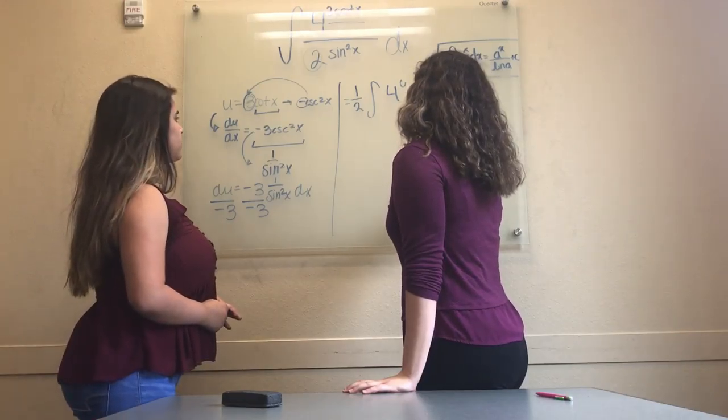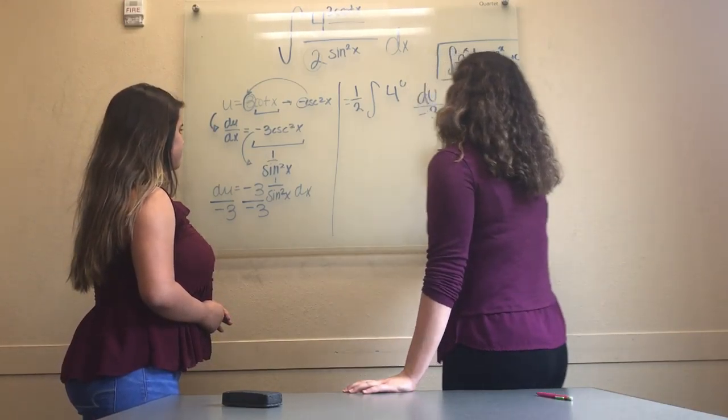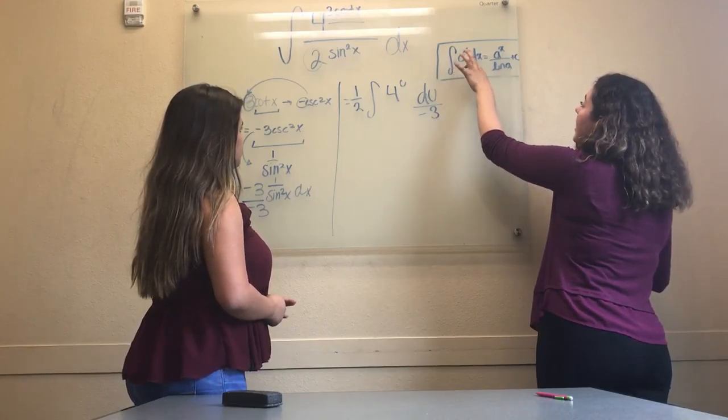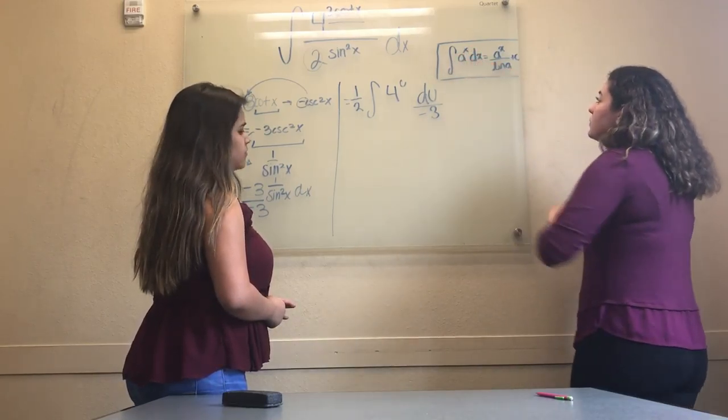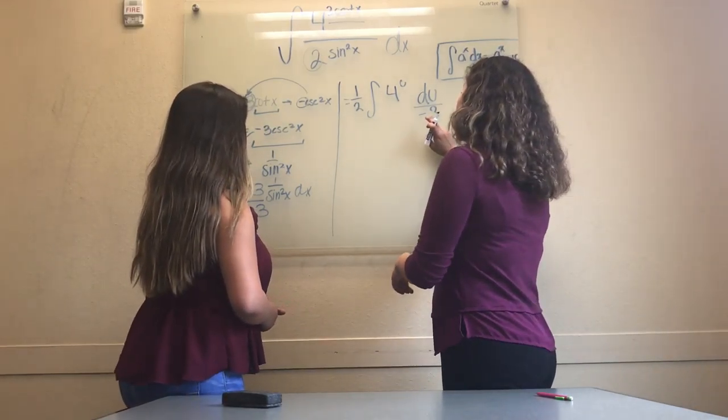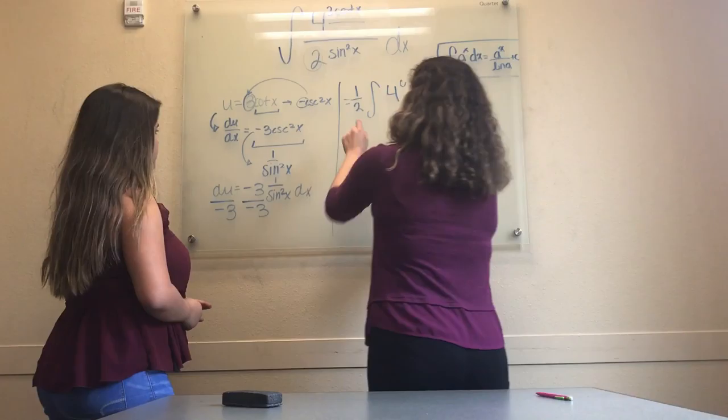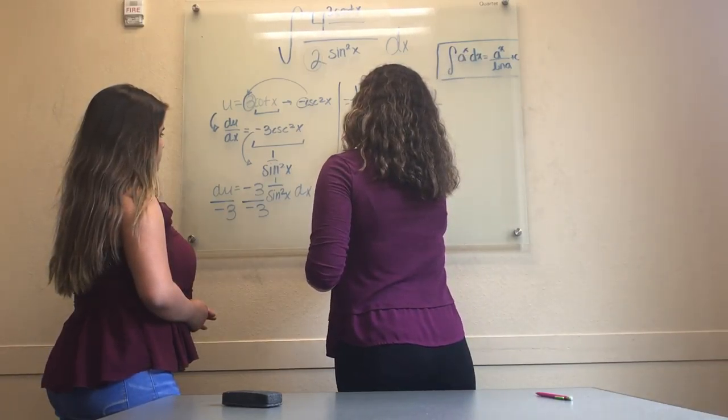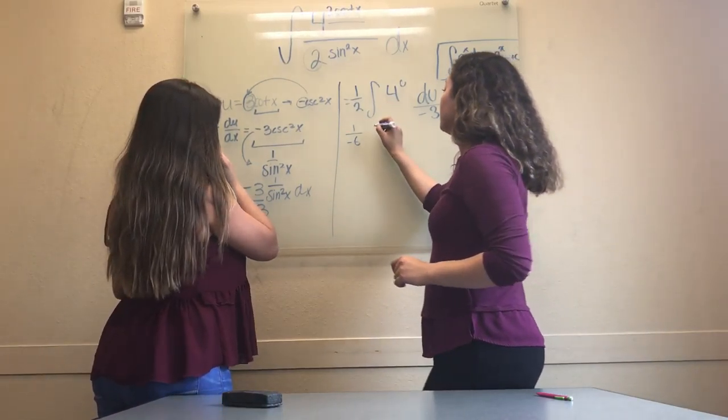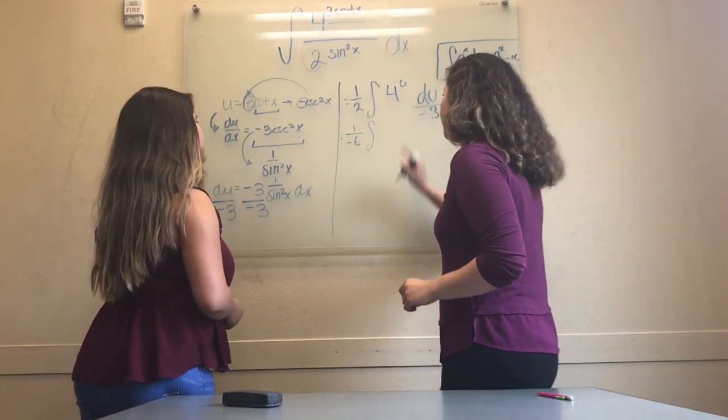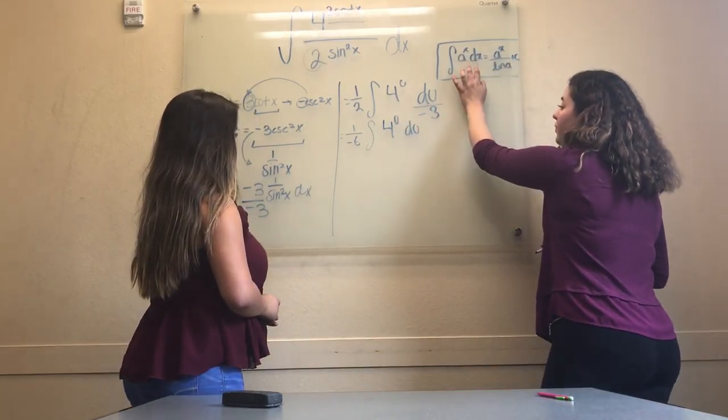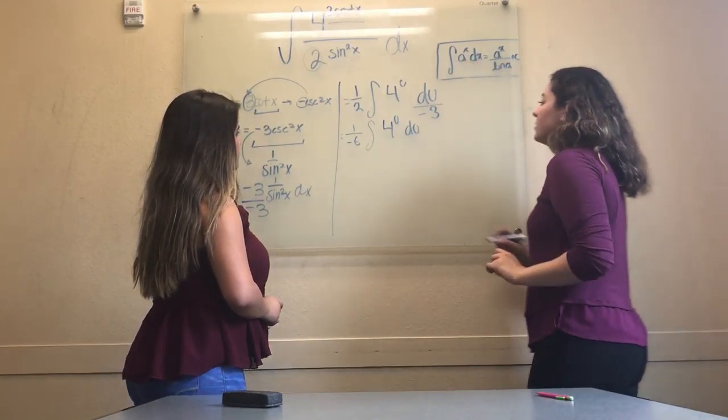So we multiply that, then du over negative 3. Because we want to use this formula, that is antiderivative a to the power of x times dx equals a to the x over ln of a plus c, we would multiply 1 over negative 3 times 1 over 2, which gives us 1 over negative 6. Then we bring down the antiderivative and we put 4 to the u du. Now we have it in the way we want it, so we can get the actual answer.